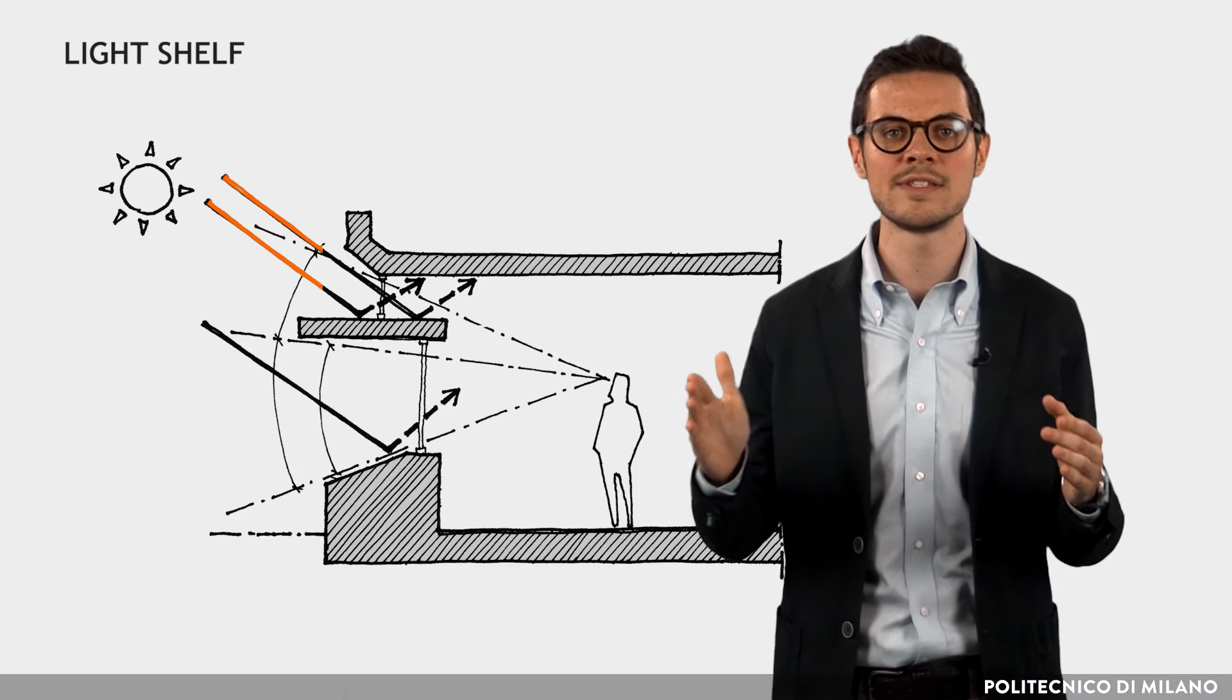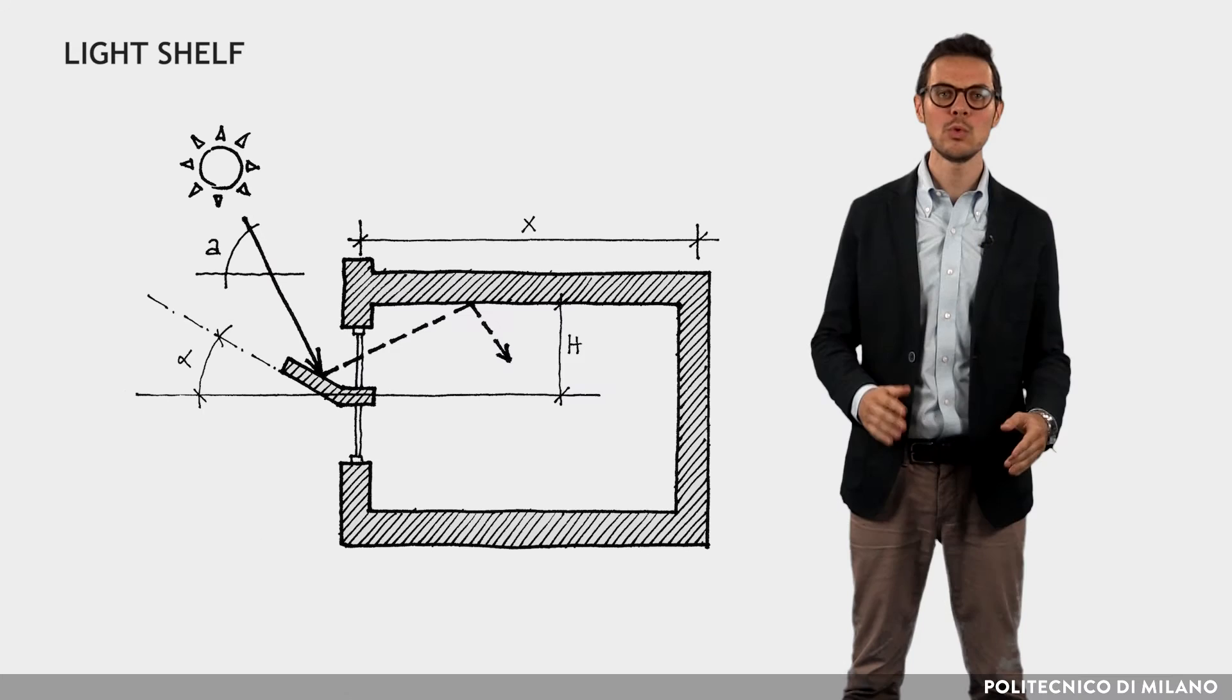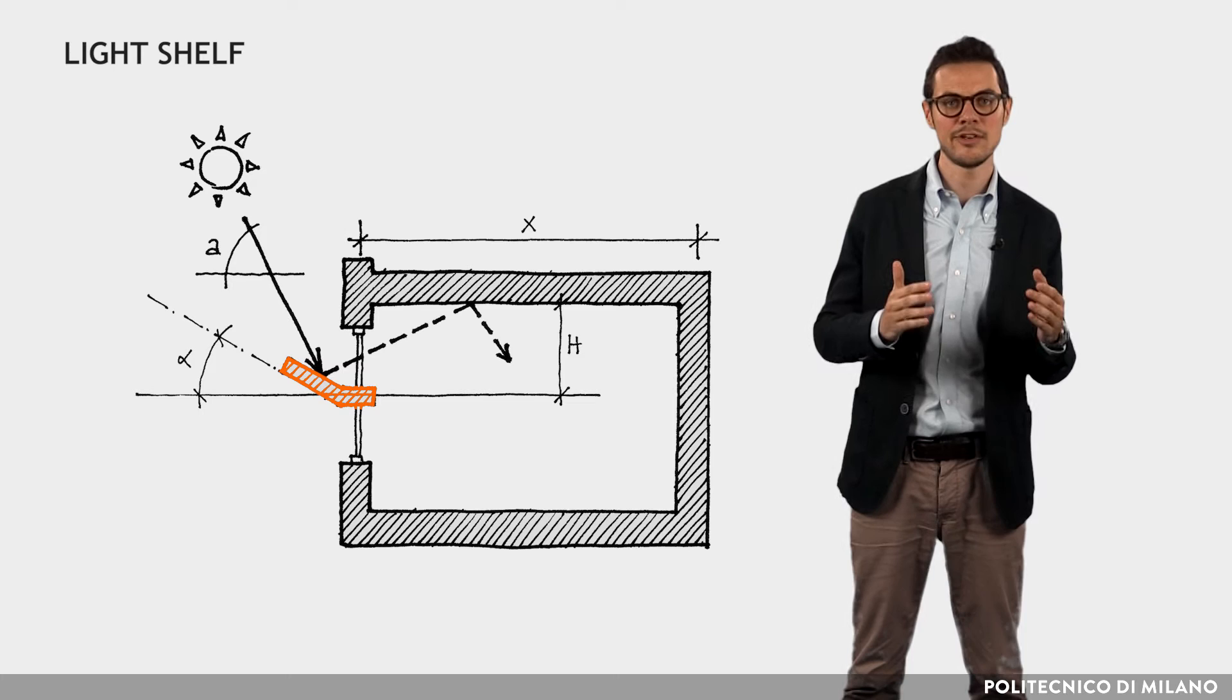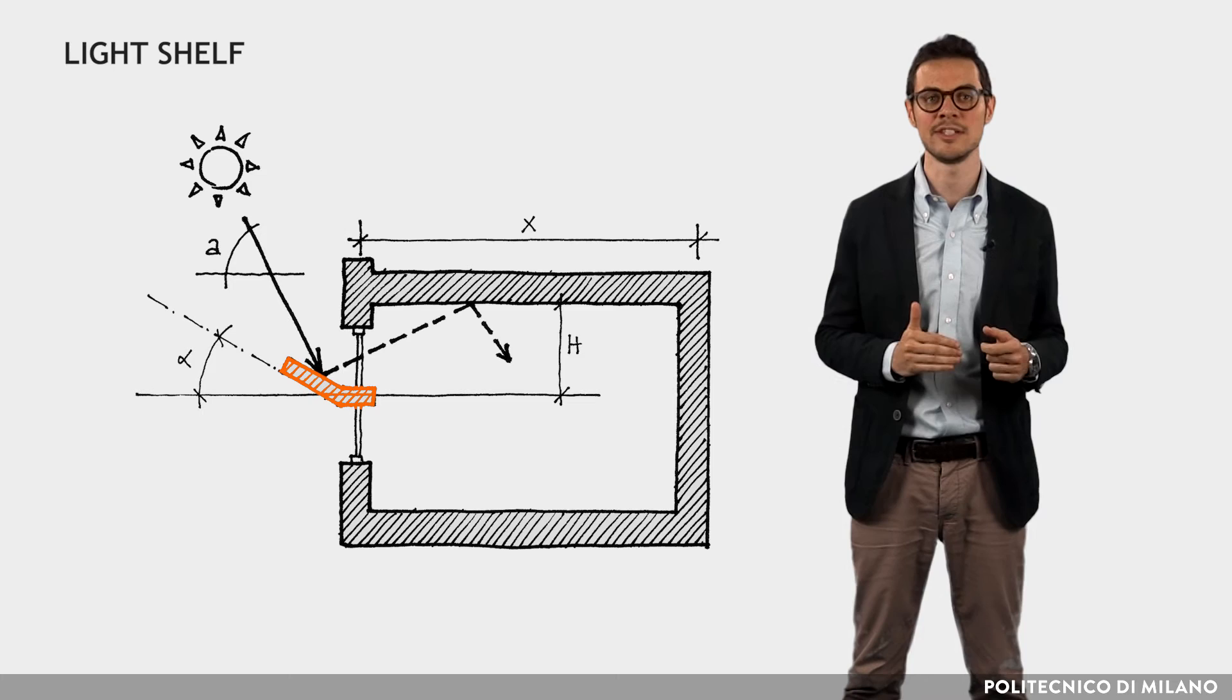The depth of the internal light shelf can be extended so as to always intercept the direct radiation through the windows above. At low latitudes, if the south or north-facing light shelf is tilted upwards, the contribution of natural light increases, but the exterior part must be extended for providing satisfactory window shading.